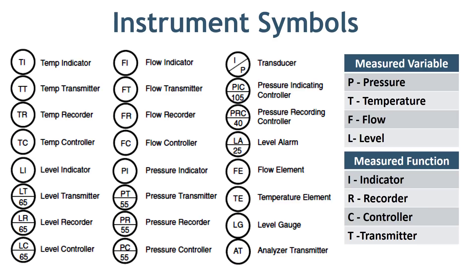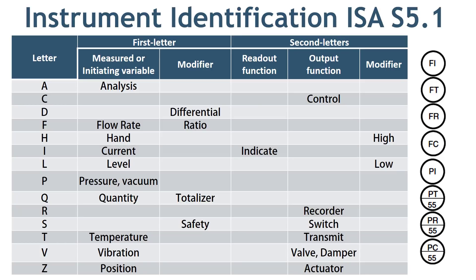Now back to our symbols. Here you can see the various instrument bubbles. In a process plant, more than 90% of instruments measure either pressure, temperature, flow, or level. You can see the small table on the right-hand side which shows the first letter of the instrument. The functions of these instruments are either to indicate, record, control, or transmit the measured value. On this table, you can see the meaning of the first letter and subsequent letters — you can pause the video to read all the letters and their meanings.